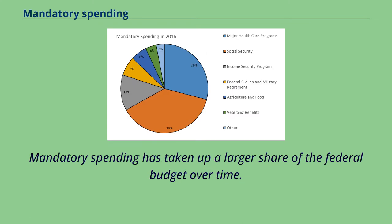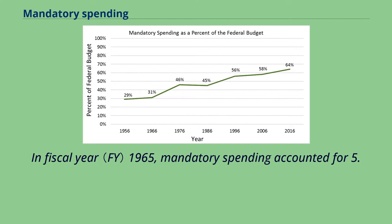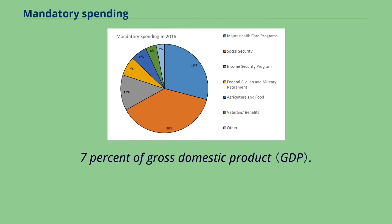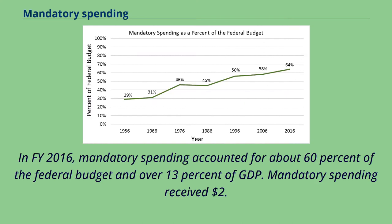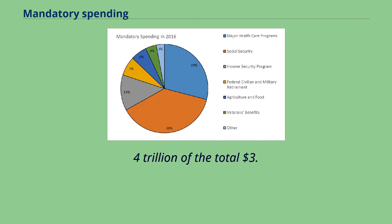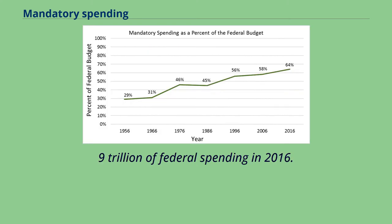Mandatory spending has taken up a larger share of the federal budget over time. In fiscal year 1965, mandatory spending accounted for 5.7% of gross domestic product. In FY 2016, mandatory spending accounted for about 60% of the federal budget and over 13% of GDP, receiving $2.4 trillion of the total $3.9 trillion of federal spending.